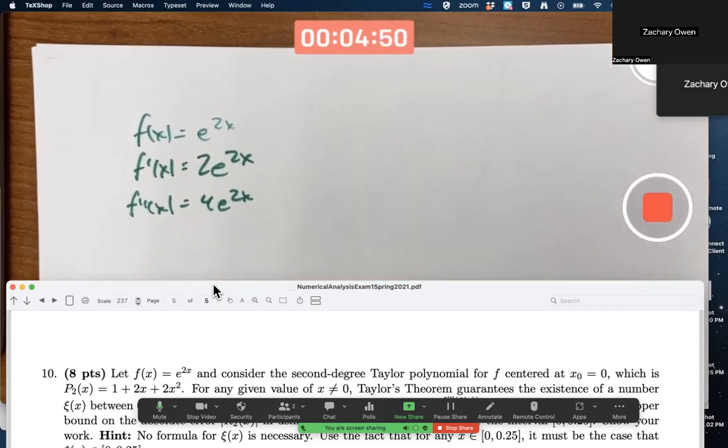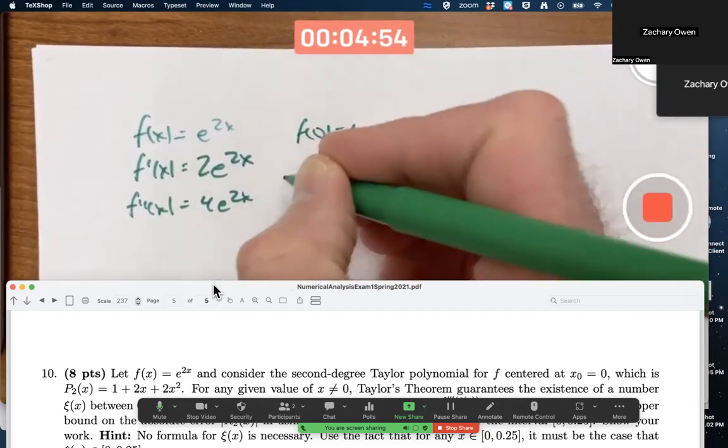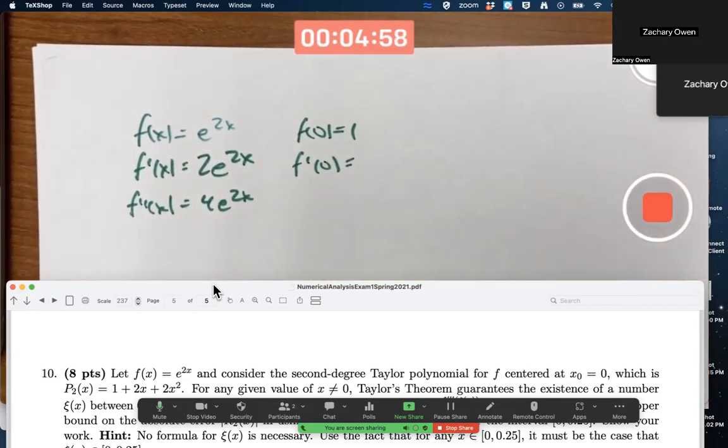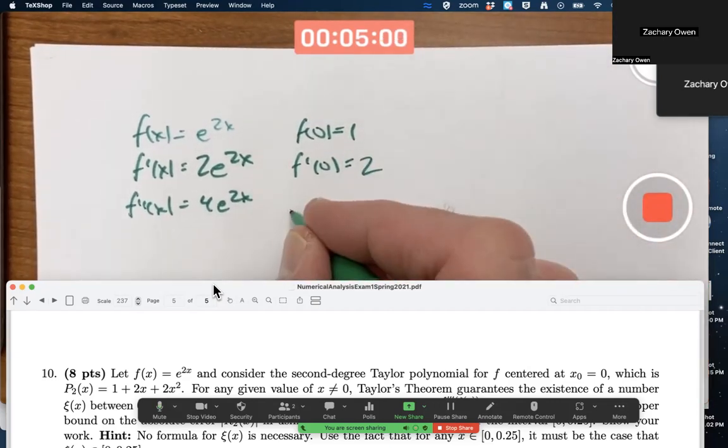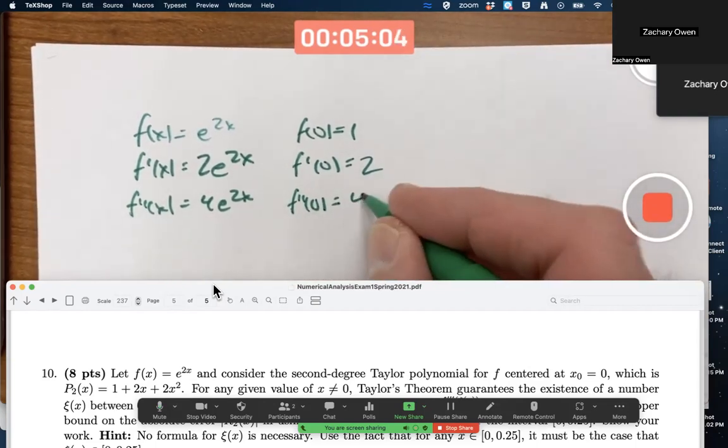The x zero is zero, so we need to plug in zero into these things. f of zero is e to the zero is 1. f prime of zero is 2e to the zero is 2, and f double prime of zero is 4e to the zero is 4.